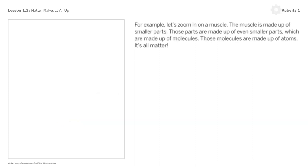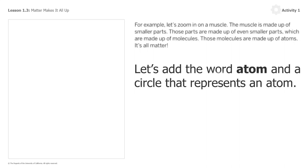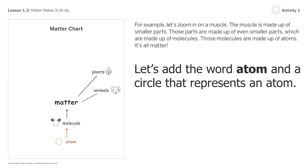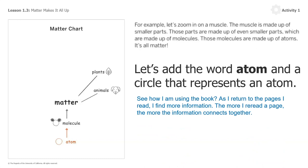For example, let's zoom in on a muscle. The muscle is made up of smaller parts, these parts are made up of even smaller parts, which are made up of molecules, and these molecules are made up of atoms. It's all matter. Let's add the word atom and a circle that represents an atom. You can do that on yours as well. Notice how I am using the book — as I return to pages I've read, I find more information. The more I reread a page, the more information connects together.